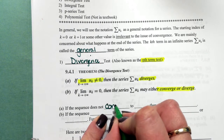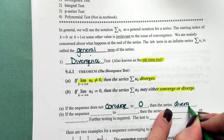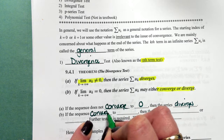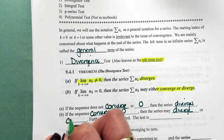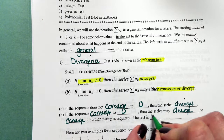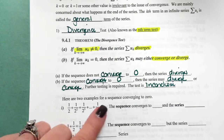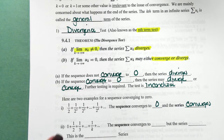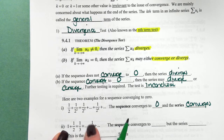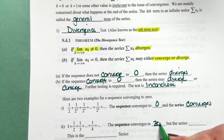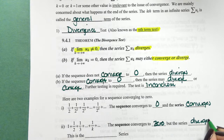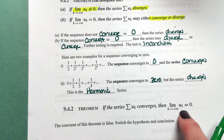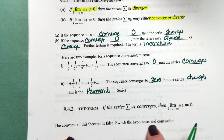If the sequence does not converge to 0, you're done — the series diverges. If the sequence converges to 0, then the series may diverge or converge; another test is required. Here are two examples: the sequence converges to 0 and the series converges. But for 1 + 1/2 + 1/3 + ... + 1/k, the sequence converges to 0 yet the series diverges — this is our harmonic series. The divergence test only tells us divergence if the limit is not equal to 0; the converse of this theorem is false.